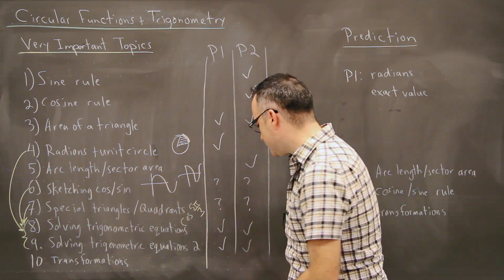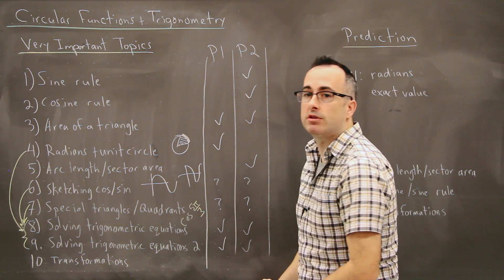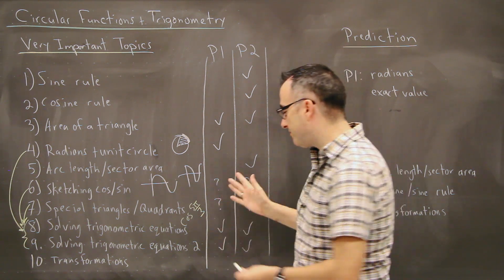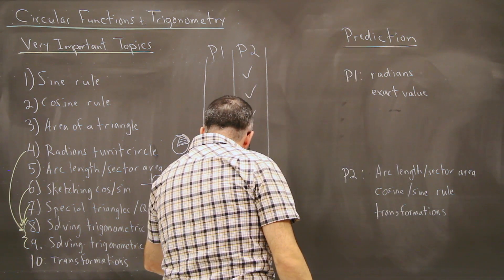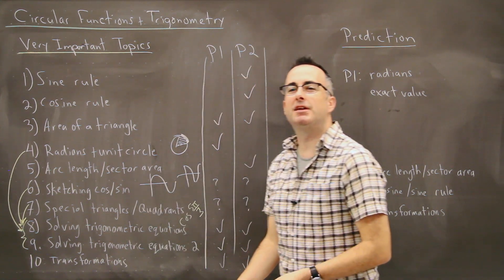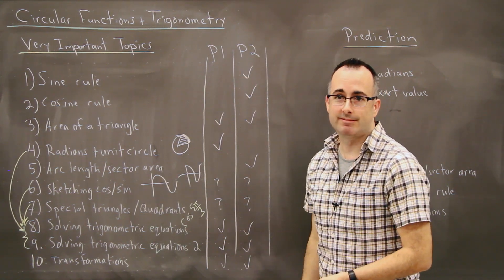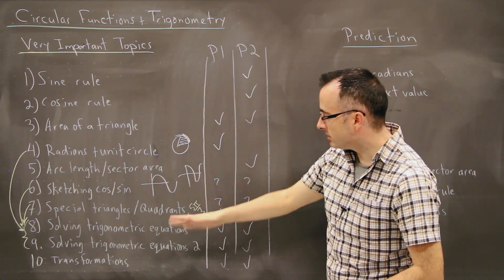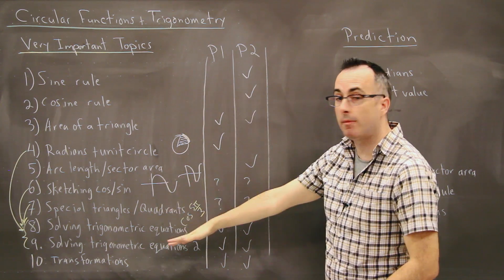Then we have transformations of sine and cosine, and those are found on pretty much, they're found on paper one and two, but they're found a little bit more on paper two, at least. So this is how we can do this. So just keep in mind, this is really what the most common things are.